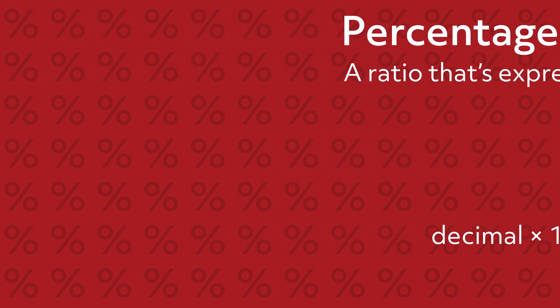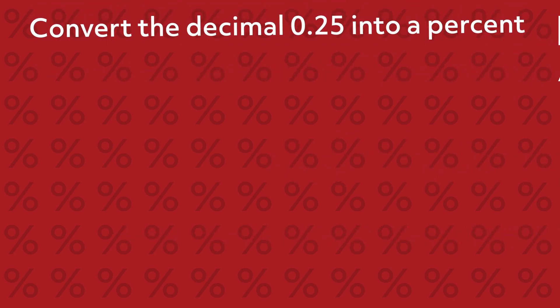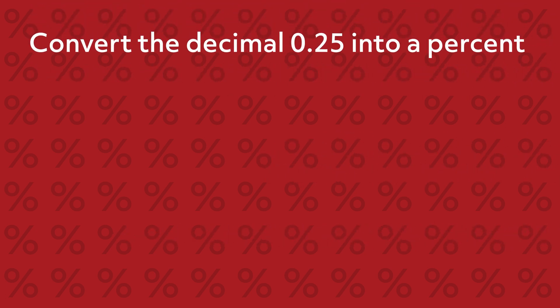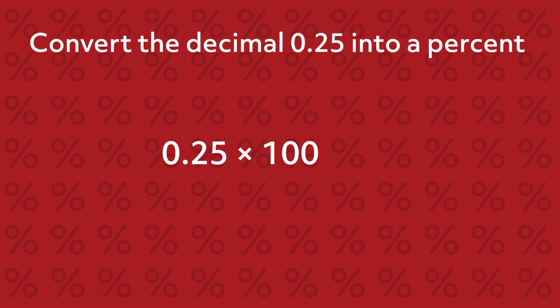Let's look at an example together. Convert the decimal 0.25 into a percent. First, multiply 0.25 times 100. To multiply a decimal by 100, move the decimal point 2 spaces to the right. That gives us a product of 25. Therefore, 0.25 equals 25%.